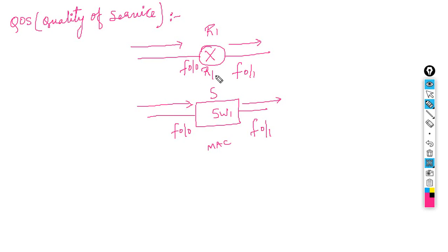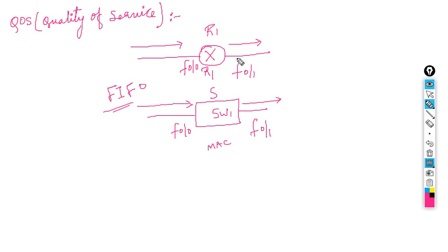By default, Quality of Service is not enabled in the router, switch, or firewall. Whatever traffic is coming into the router, the router is going to check and forward it — that's all. Whoever comes first — FIFO, First In First Out — the router does the FIFO process. Whoever comes in first will leave first out. Same thing for the switch also. So here we are not giving any priority.